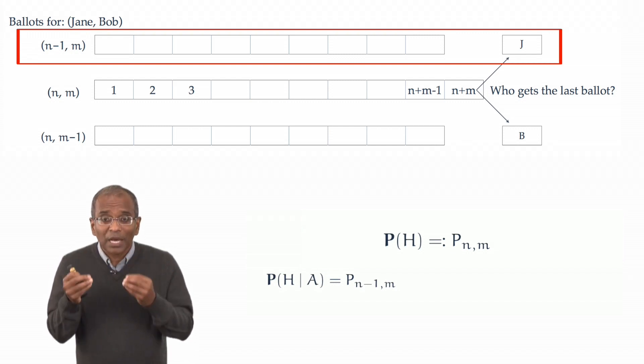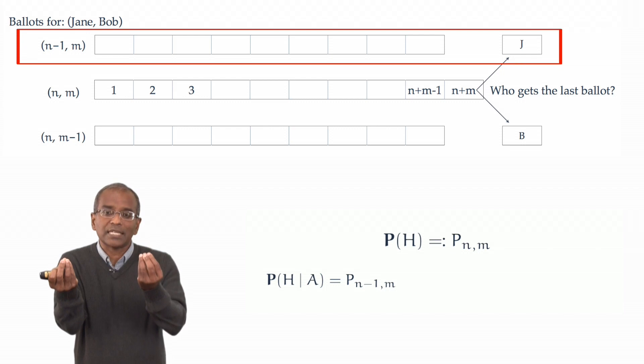Recall, p of n minus 1 comma m tells us that in an election where one candidate Jane gets n minus 1 votes, Bob gets m votes, that the candidate Jane leads at every step of the way. That's exactly what is captured now in our conditional probability.